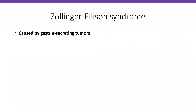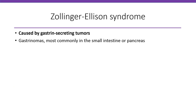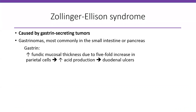Zollinger-Ellison syndrome is basically caused by gastrin-secreting tumors called gastrinomas. They produce gastrin. Most commonly, these tumors are present in the small intestine or pancreas. Increased gastrin has an effect on the fundic mucosa — it will increase or double the fundic mucosal thickness due to an increasing number of parietal cells, giving you a five-fold increase in the number of parietal cells.